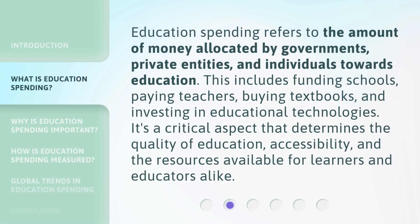Education spending refers to the amount of money allocated by governments, private entities, and individuals towards education. This includes funding schools, paying teachers, buying textbooks, and investing in educational technologies. It's a critical aspect that determines the quality of education, accessibility, and the resources available for learners and educators alike.